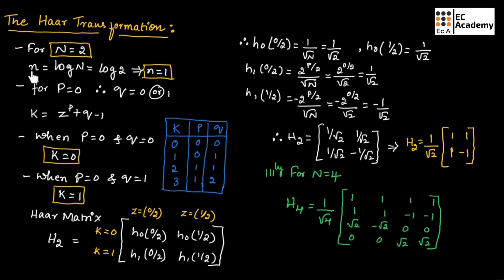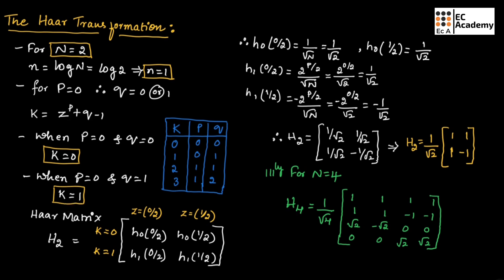For example, if we take n equals 2, we find n equals log 2, giving n equals 1. For P equals 0, Q equals 0 or 1. Using the equation K equals 2^P plus Q minus 1: when P equals 0 and Q equals 0, we get K equals 0; when P equals 0 and Q equals 1, we get K equals 1. So we have found two values of K since n equals 2.